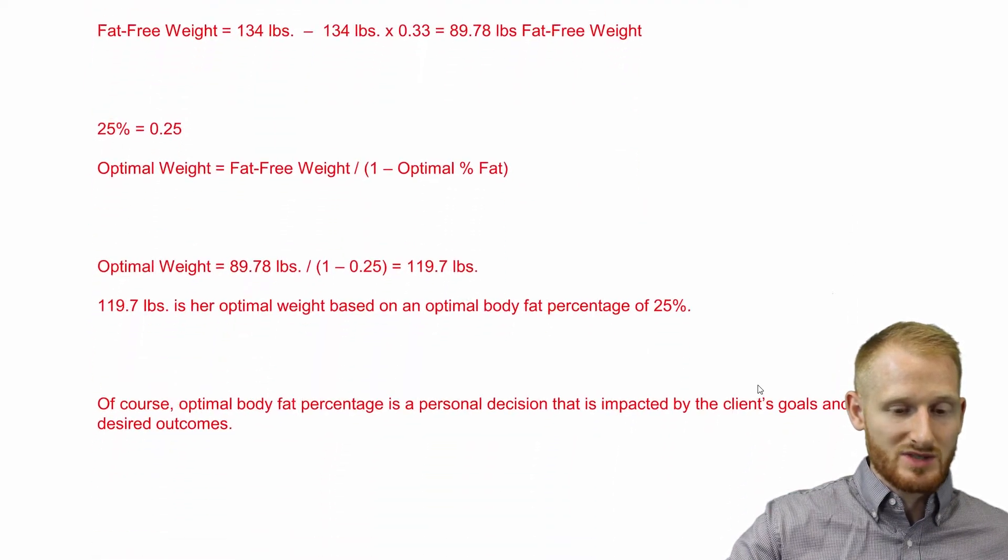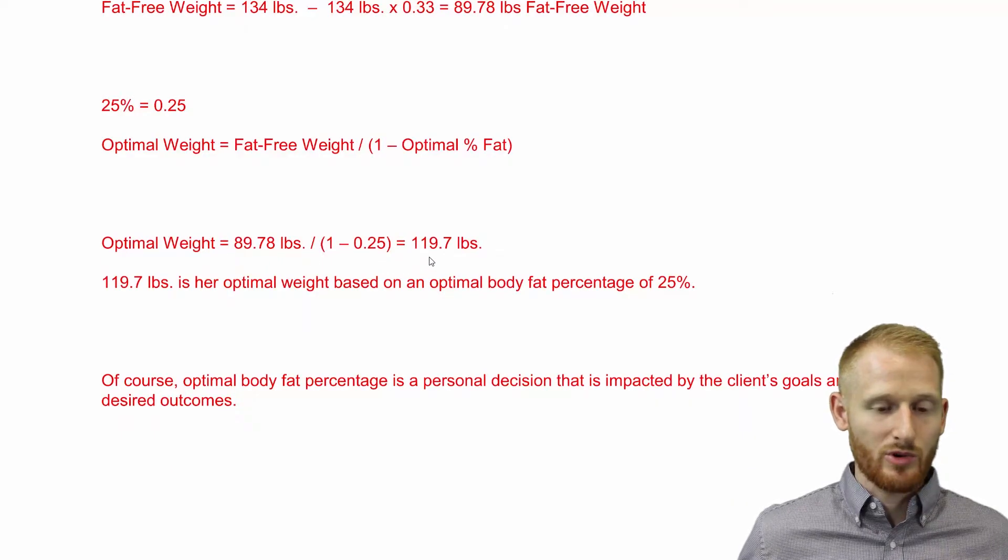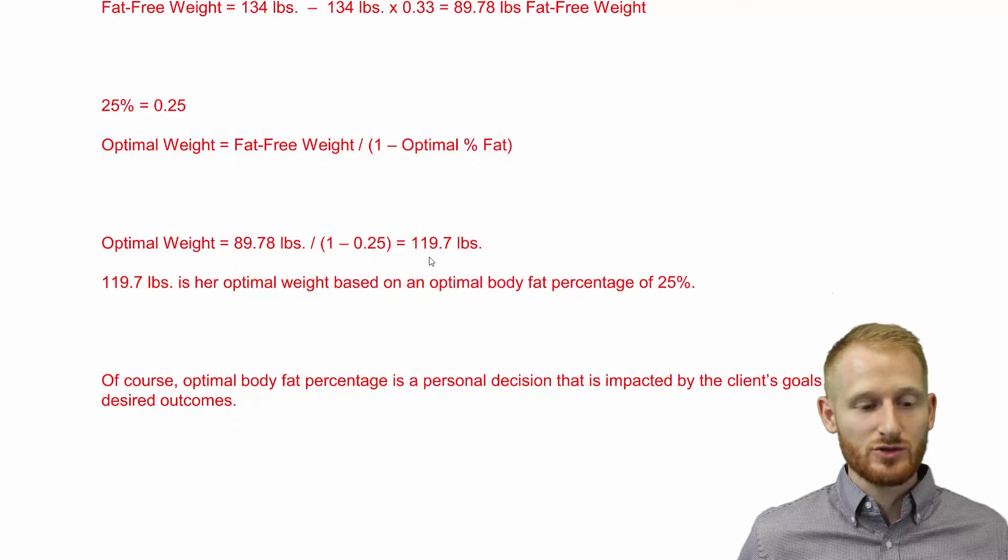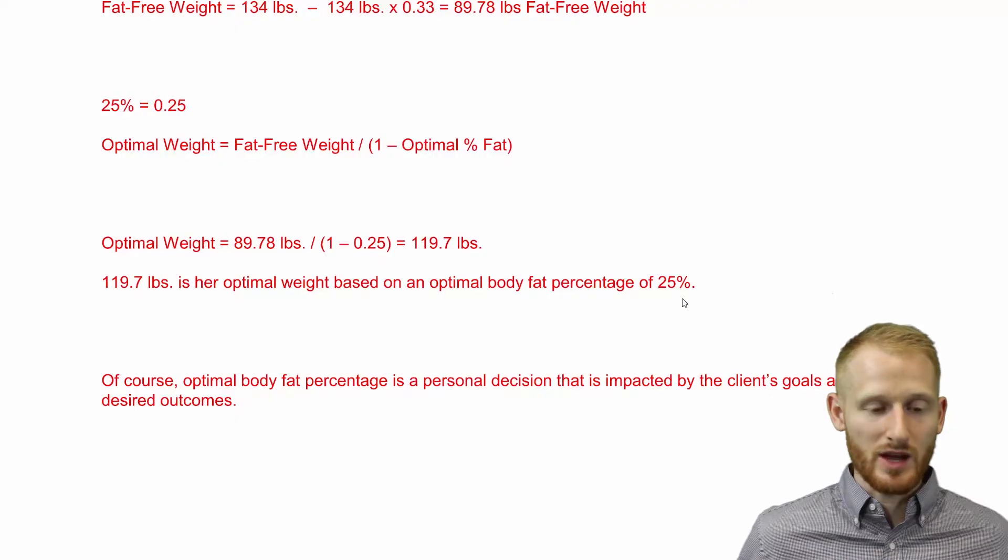Plugging those in, we get this equation. When you do that math, you end up with 119.7 pounds as her optimal body weight, assuming that she is 25% body fat when she gets to that weight.